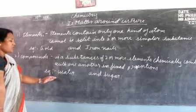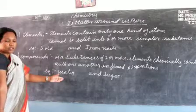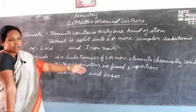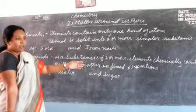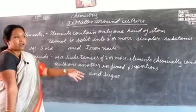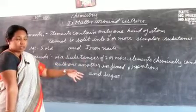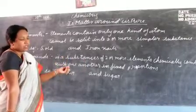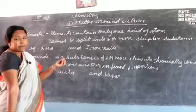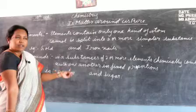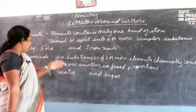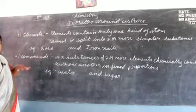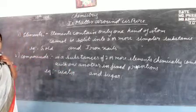Sugar is made up of carbon, hydrogen, and oxygen molecules. We can even consider salt, which is made up of sodium and chlorine, which is again a compound. So let us continue in the next class.